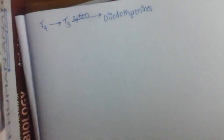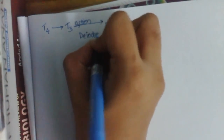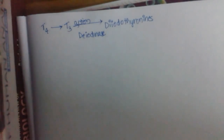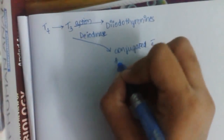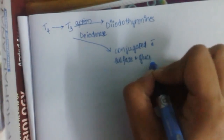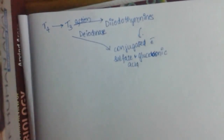Peripherally, T4 is converted to T3. After the action is completed, this T3 is degraded to diiodothyronines — that is, thyronines derived from tyrosine, similar to DIT (diiodotyrosine), but here called diiodothyronines. This occurs by deiodinases. T3 and T4 may also be conjugated with sulfates and glucuronic acid, either directly or after degradation to diiodothyronines.